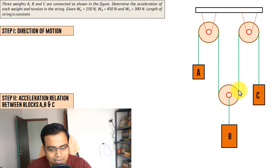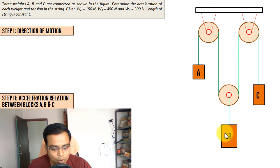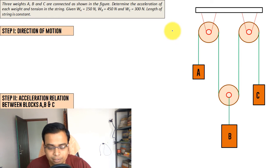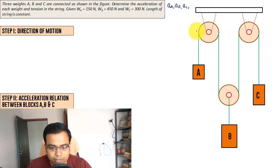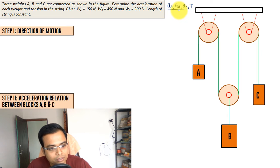Blocks A and C are connected by one single string passing over three pulleys. We can make a judgment that if A goes down, C goes up and vice versa. The things we need to determine are the individual accelerations of blocks A, B, and C, and also the tension T in the string. So we have four variables and need to frame four equations.